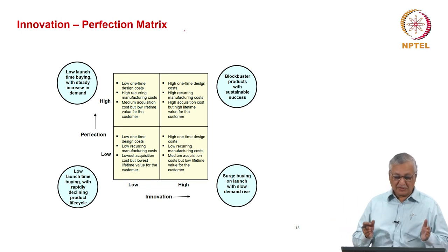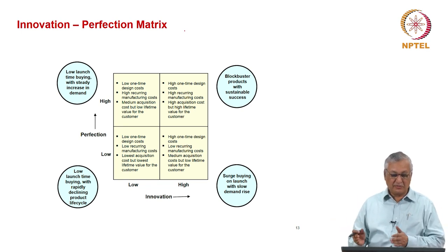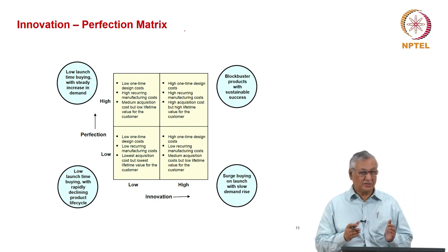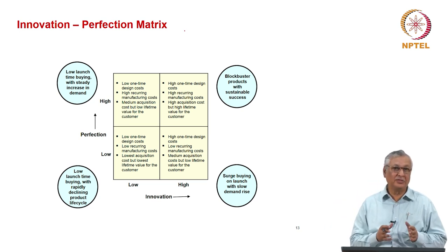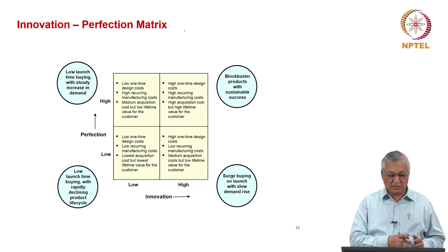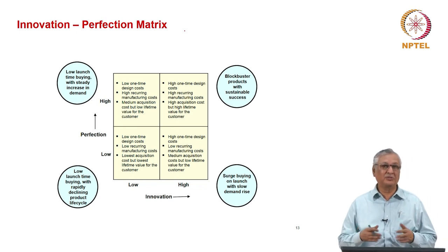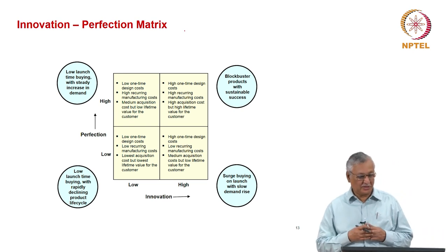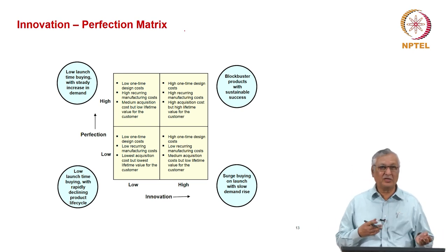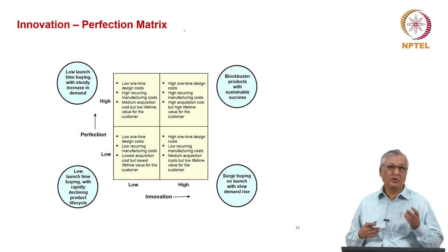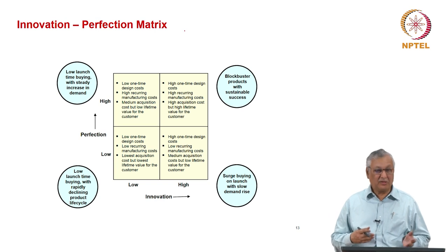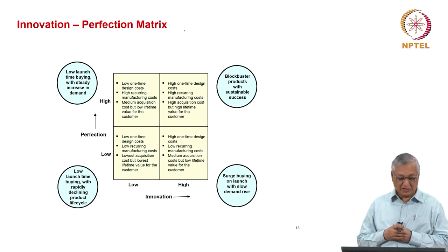So, when we look at products in terms of these two grids — that is innovation and perfection — we can look at a grid which has low innovation as well as low perfection. Obviously, this will be the cheapest to make and cheapest to buy. It will have low one-time design costs, low recurring manufacturing costs, lowest acquisition cost, but also lowest lifetime value for the customer.